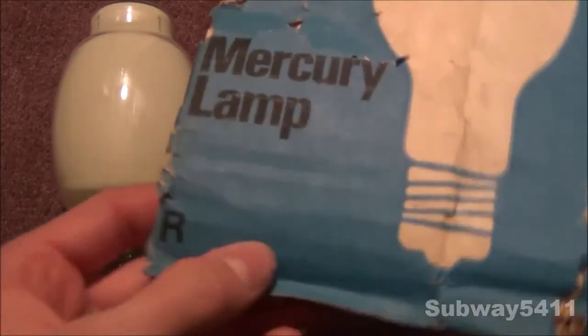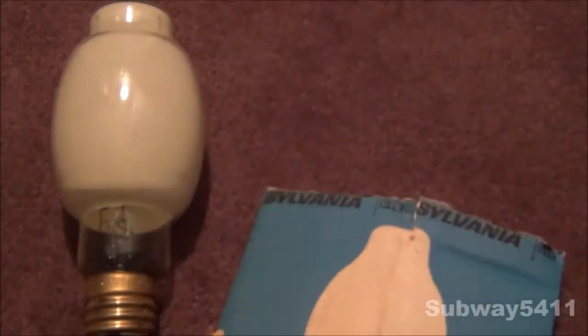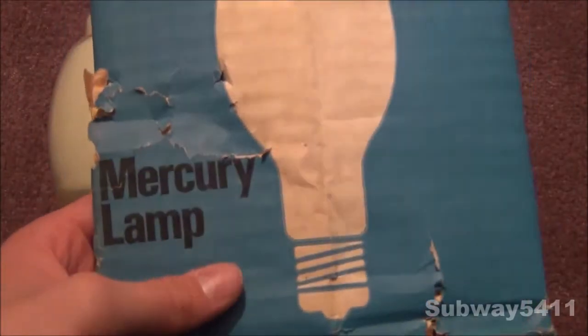Let's take a look at the package here. As you can see, it is an R lamp, meaning if the outer bulb is broken, the lamp will not shut off automatically. You can also see it says mercury lamp right there, and it has a nice BT-28 shape drawing. It says Sylvania GT on the top.